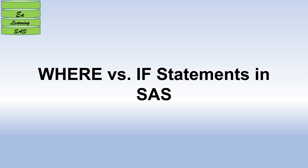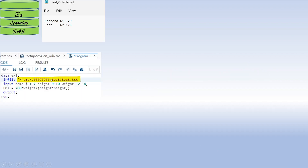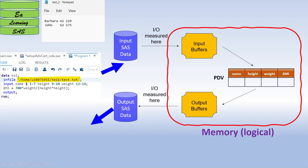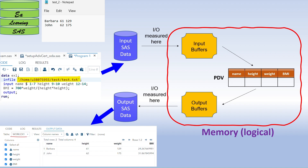In this video, I'm going to talk about the difference between WHERE and IF statements in SAS programming. When you write a program to read any raw data, it passes through various steps: the data passes through the input buffer first, then from the input buffer it goes to the Program Data Vector (PDV), then to the output buffer, and then the output data set is generated, one record at a time. This PDV is in the logical memory area of the program.